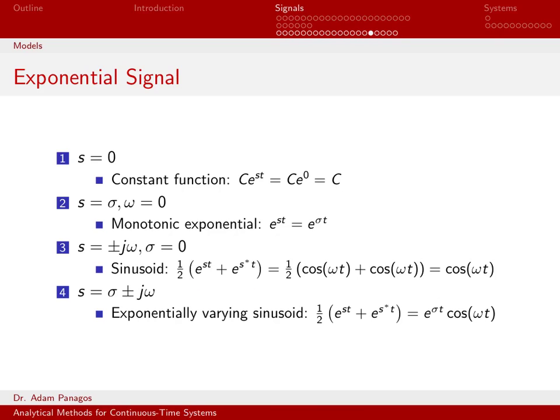You can do something similar for sine. You could write sine omega t equals e to the st minus e to the s conjugate of t over 2. So we can write sine omega t as a function of exponential signals.